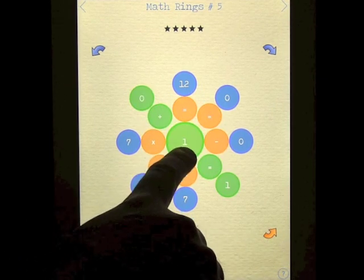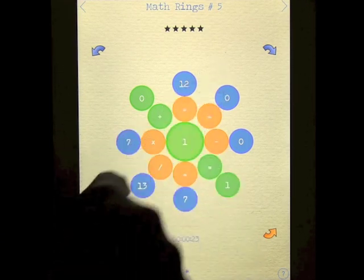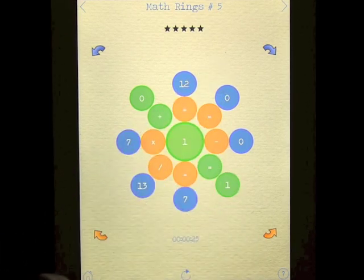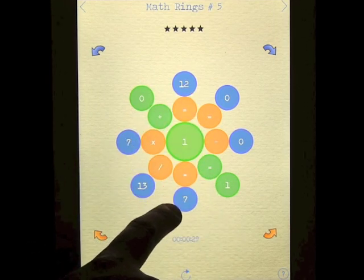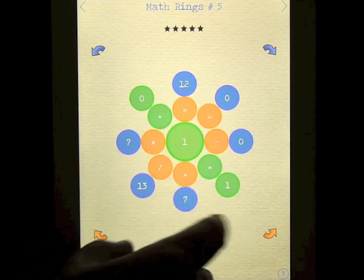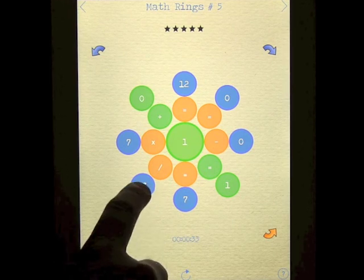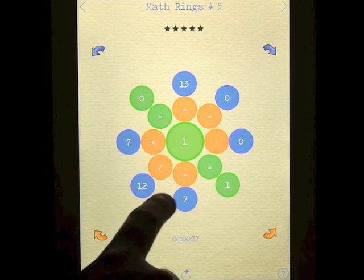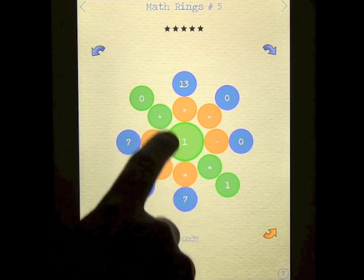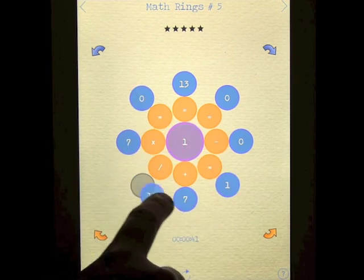So the number in the middle always stays the same, but the idea is to solve all of the problems by rotating these symbols. So 12, for example, equals one something. Or you could go 13 equals one and then plus and then 12.